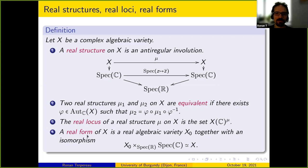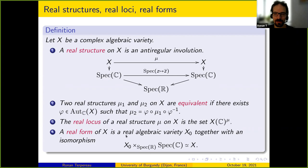This fiber product simply means that if you think about X0 as locally given by polynomial equations with real coefficients, you now consider these coefficients as complex coefficients and get a complex variety — and you want this complex variety to be isomorphic to X.